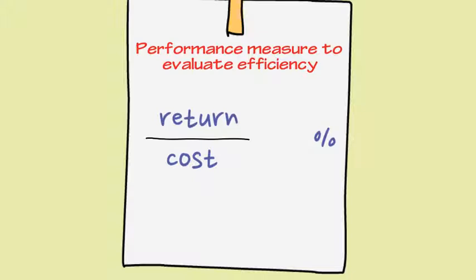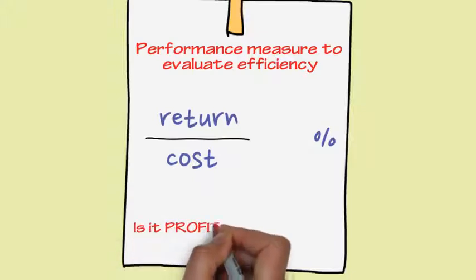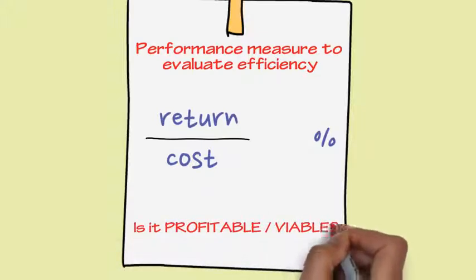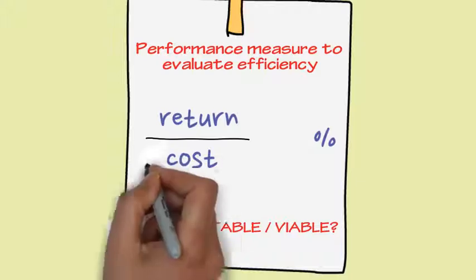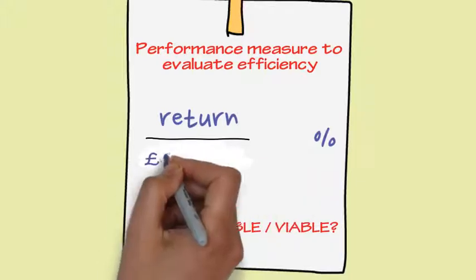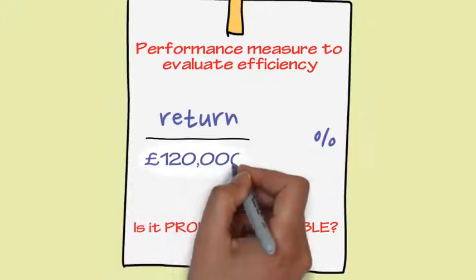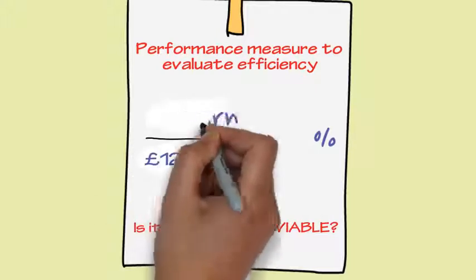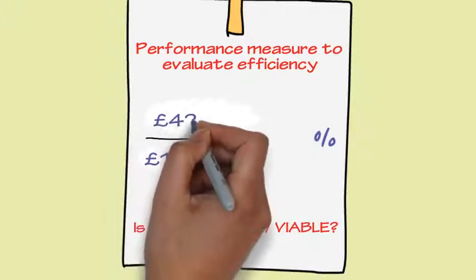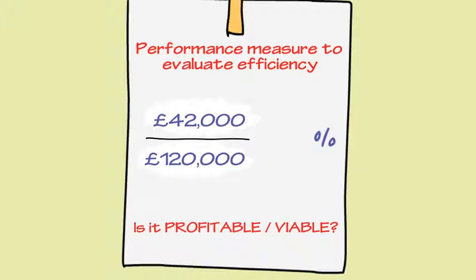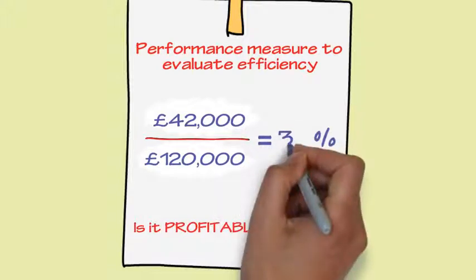In simple terms, is investing in my project profitable and therefore viable? For example, if the cost of delivering a project is £120,000 and the projected annual return or profit from the project is £42,000, our ROI is £42,000 divided by £120,000 giving us 35%.